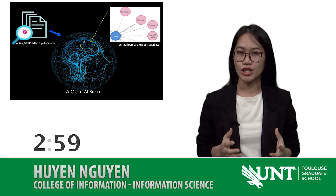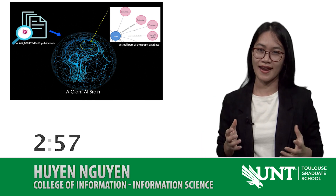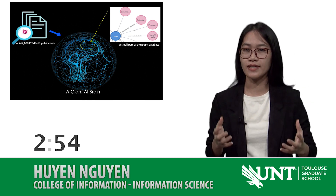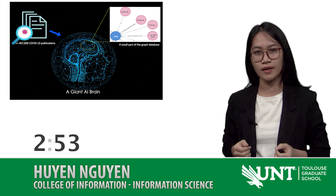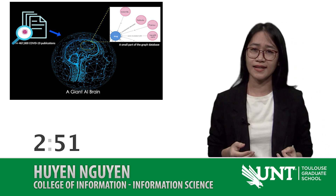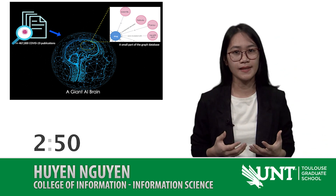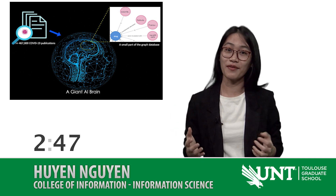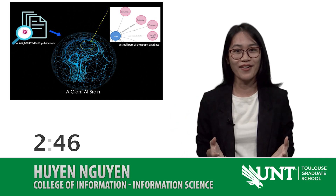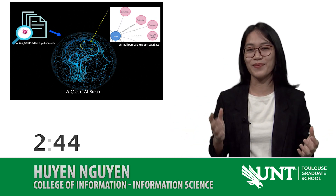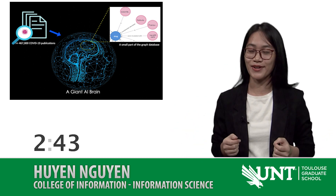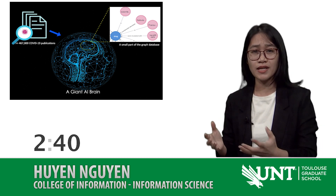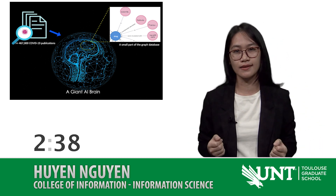COVID-19 has killed more than 2,690,000 people worldwide, and it has shut down the global economy. Many of us were isolated and depressed. But thankfully, with at least seven different vaccines rolling out globally now, I can see a big smile that's almost coming back to normal.